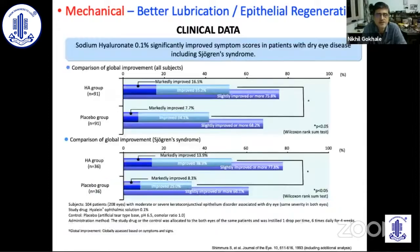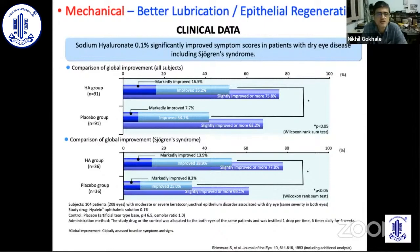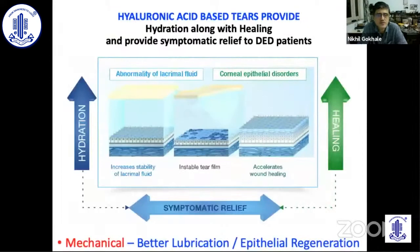Several clinical articles document that when you use sodium hyaluronate, it improves symptom scores and reduces ocular surface staining in patients with various forms of dry eye disease, including the Sjogren's and non-Sjogren's variety. These patients have done better than placebo and compared to other polymers available for dry eye. So when you use hyaluronic acid-based tears, you not only provide hydration to the ocular surface but also provide a healing response.